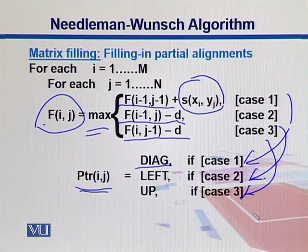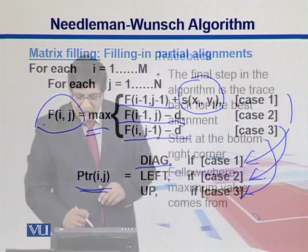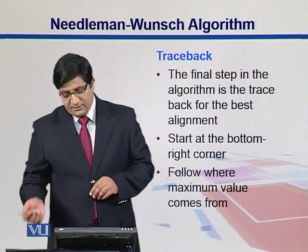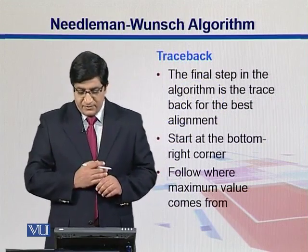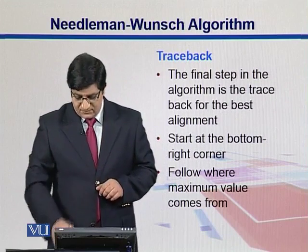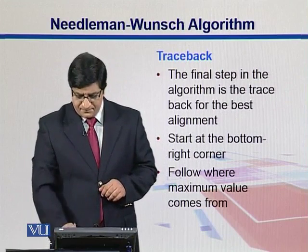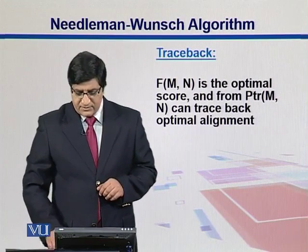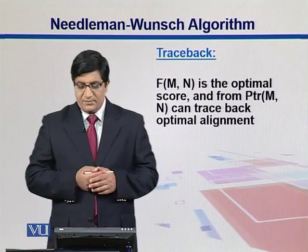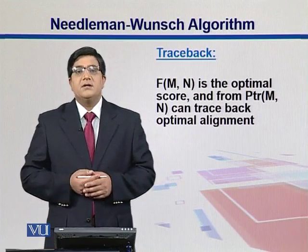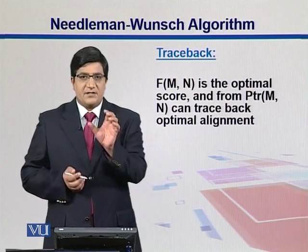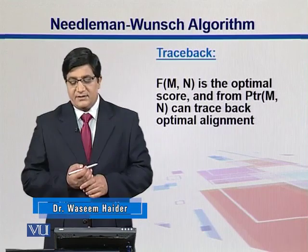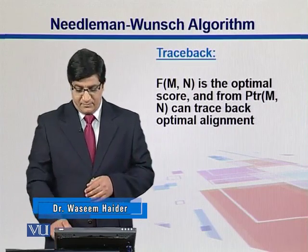The final step is traceback. We start at the bottom-right corner and follow where the maximum score comes from. F(m,n) is the optimal score, and following the pointer PTR backwards gives the optimal alignment.